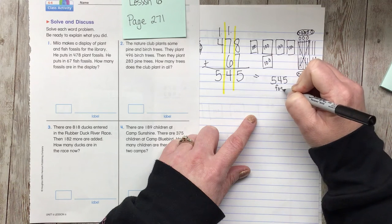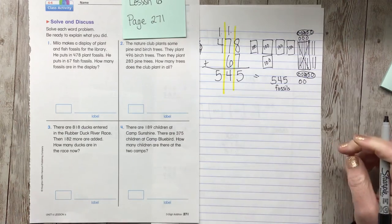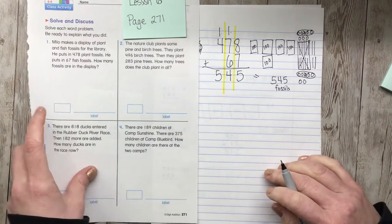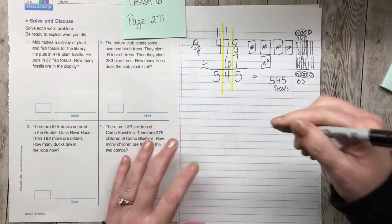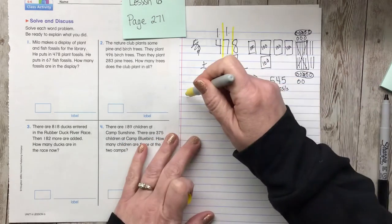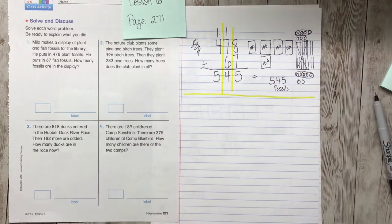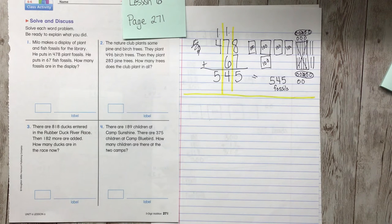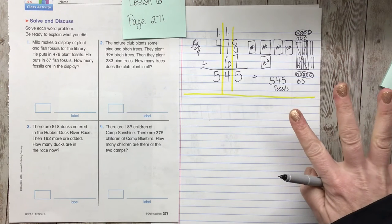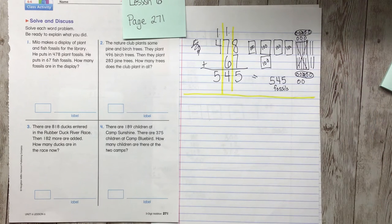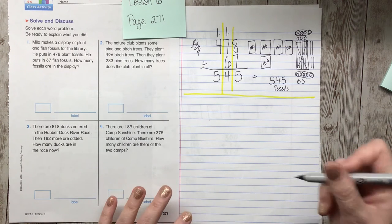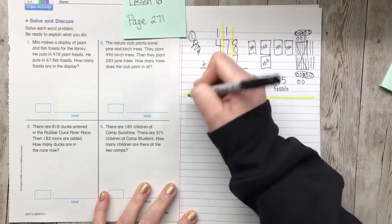So we have 545 fossils. I wish I had 545 fossils, that would be pretty rad. All right. I'm going to put a line here. Questions about this. Give me a thumbs up if you remember doing this. That doesn't mean you're perfect at it, it just means that you're like, oh yeah, I remember when we did that. Thumbs up if you're kind of feeling it. All right. So this is number one, and here's number two.